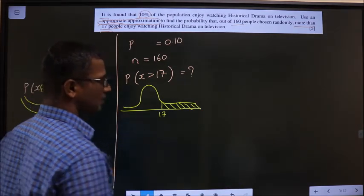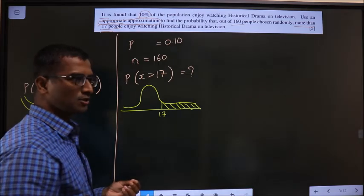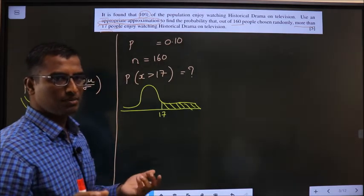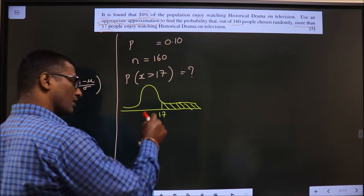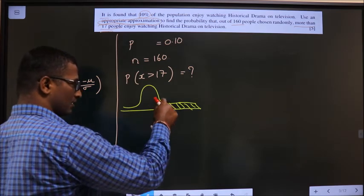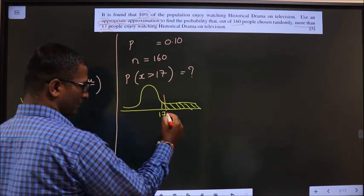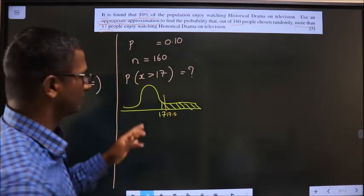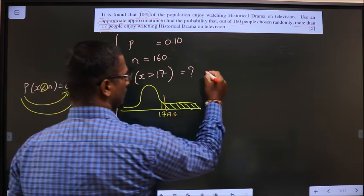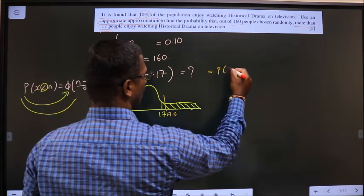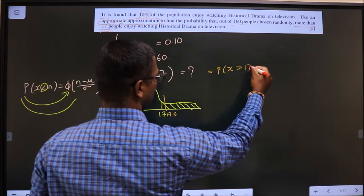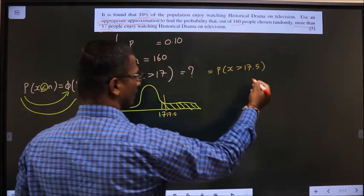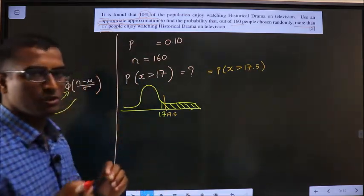You need to find greater than 17 means this area. Normal distribution is not given, you are using it, so 0.5 correction. What does it mean? You have to move this bar to this side, to 17.5. 17 should not be included. So this will become now P of x greater than 17.5. This correction you should do.